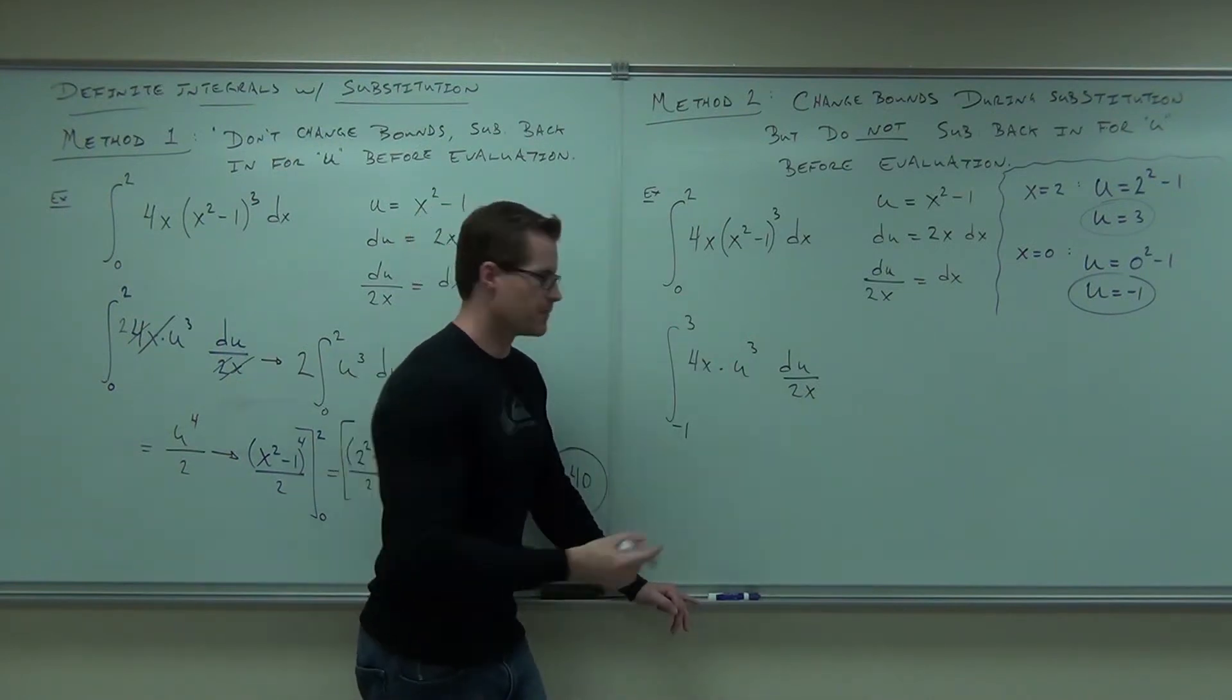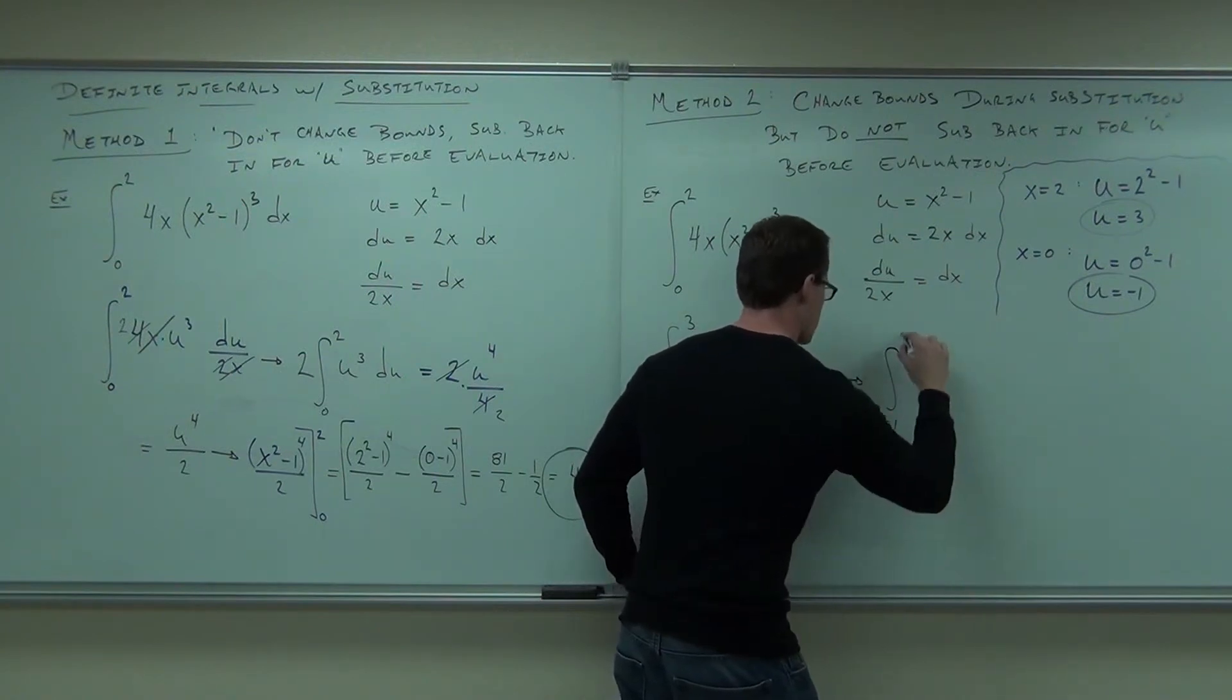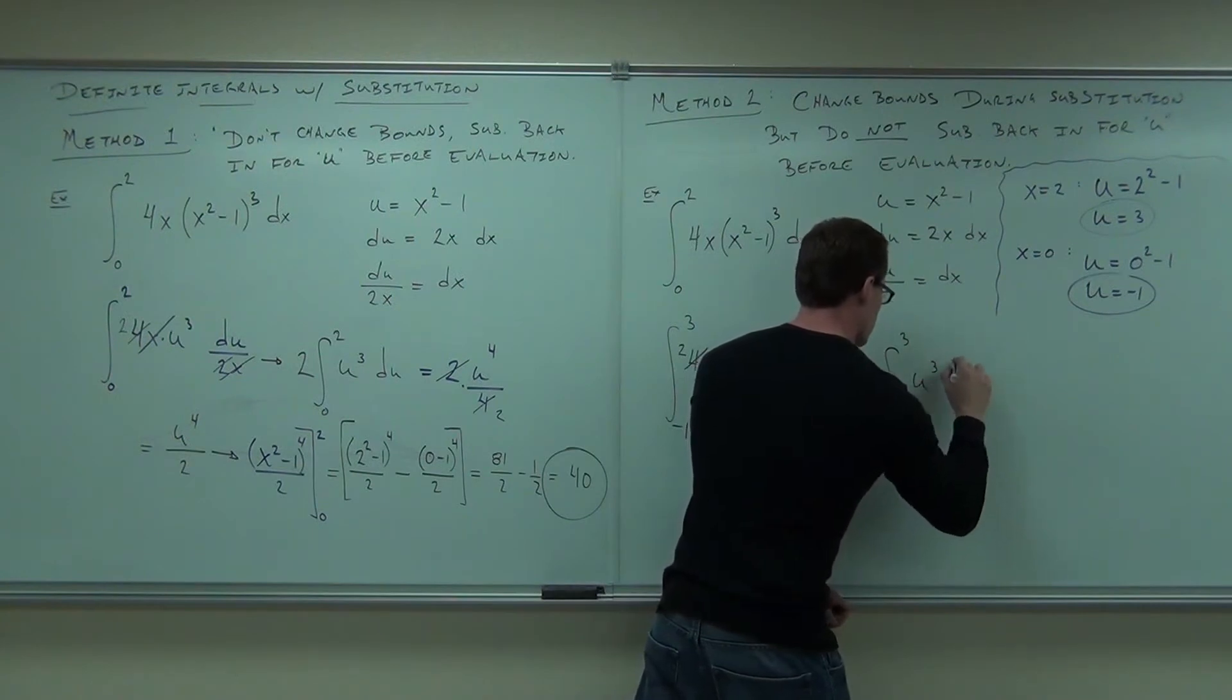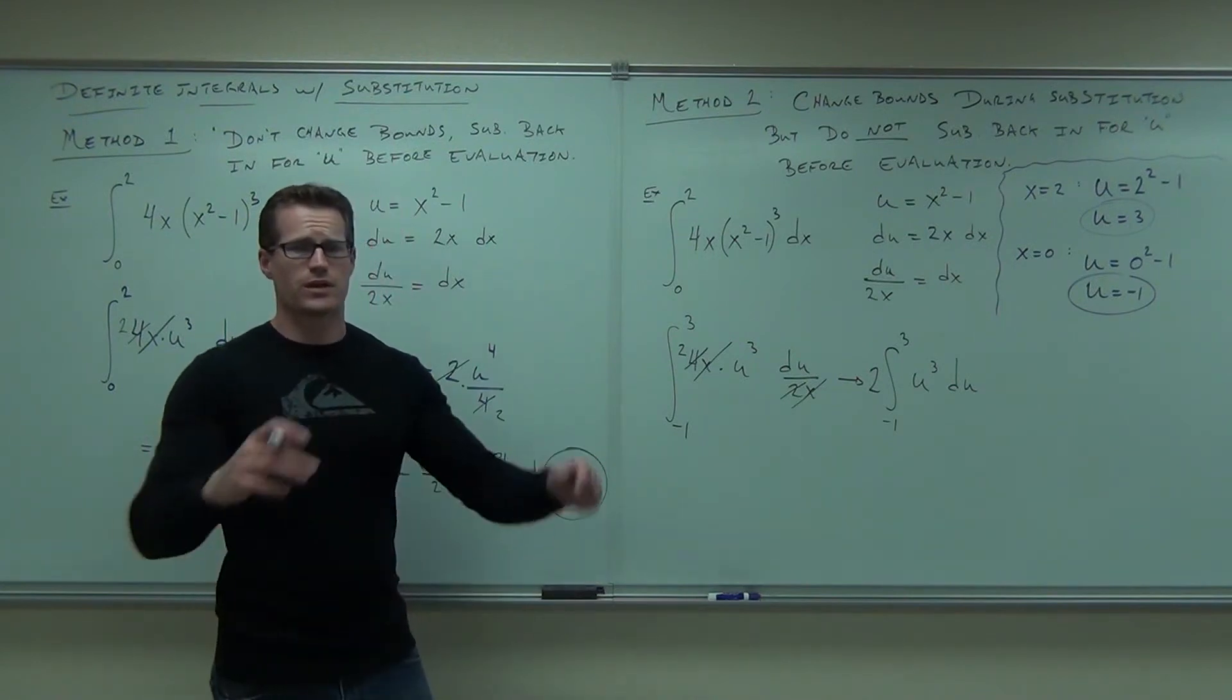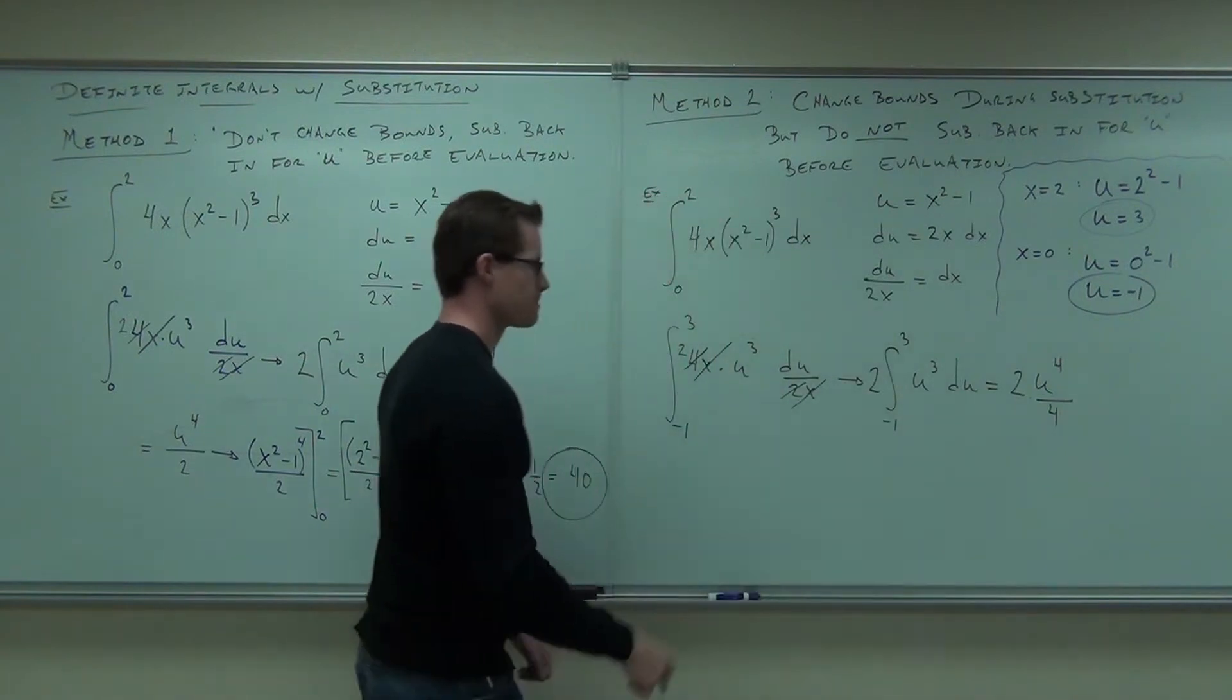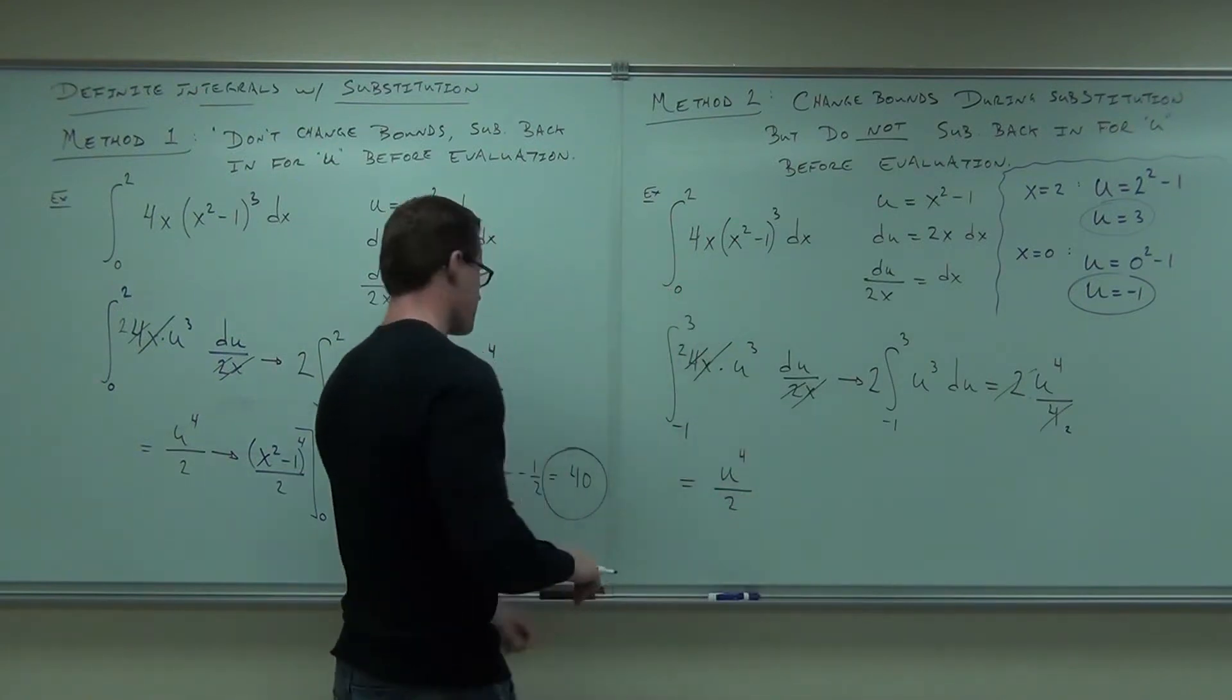It's going to be done the same way. 2 is gone. x is gone. So negative 1 to 3, we'll still pull the 2 outside. u to the 3rd du. Hey, we even do the integral the same way. We're going to get 2 times u to the 4th over 4. And we'll simplify that to u to the 4th over 2.